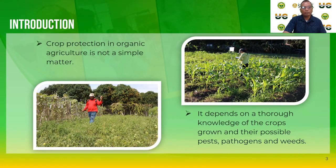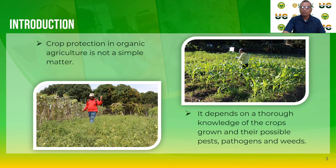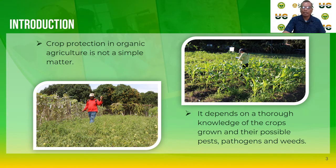Crop protection in organic agriculture is not a simple matter. It depends on thorough knowledge of the crops grown and their possible pest pathogens and weeds. Successful organic crop protection strategies also rely on understanding the effects of local climate, topography, soils, and all aspects of the production system likely to affect crop performance and possible host-pest complexes.